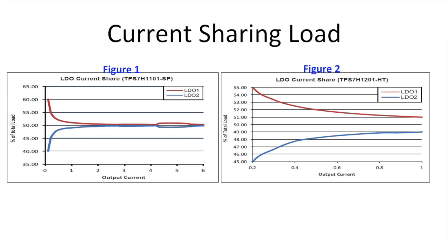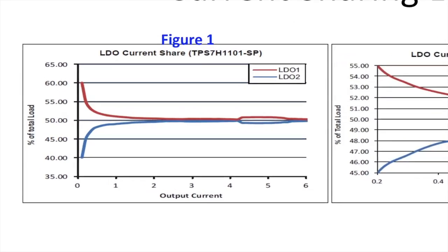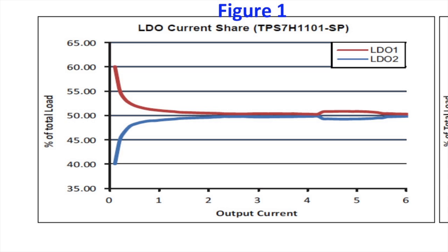These figures highlight the current sharing accuracy of the devices. Figure one shows the percent of load current for each device versus the total output current for the TPS7H1101-SP. At 1.5 amps output current the device's current share within two percent up to six amps.